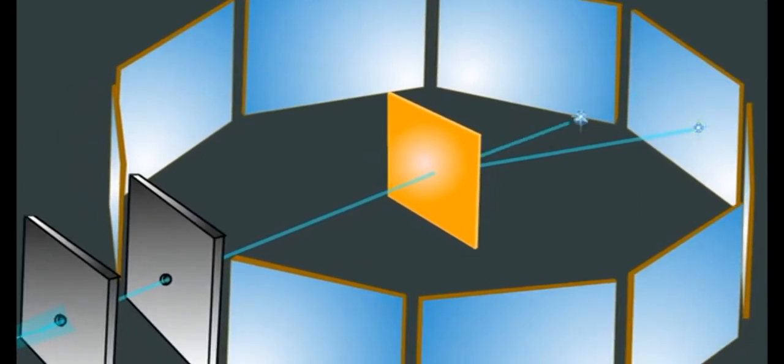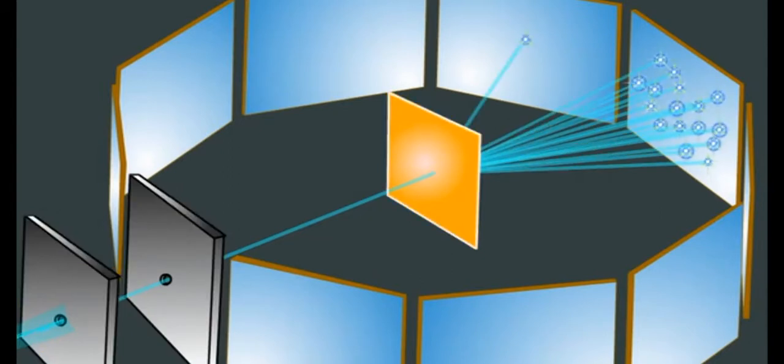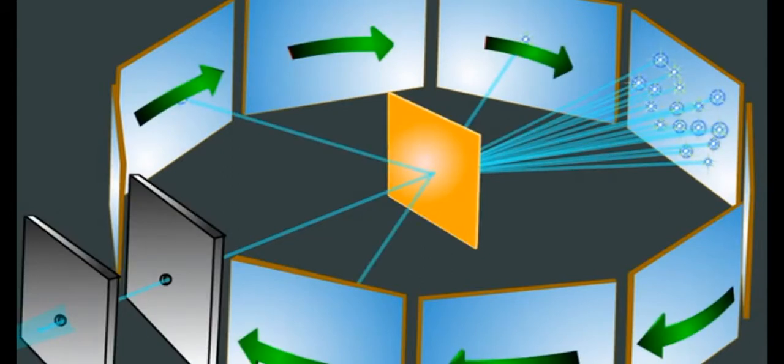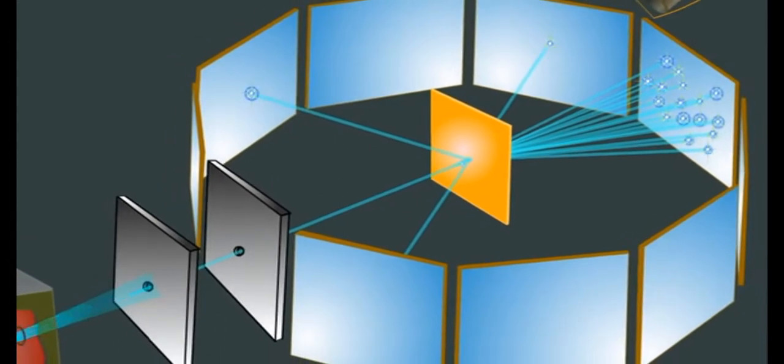Some alpha particles scattered through small angles while a few of them scattered through large angles. Only very few of them turned back to their original path.